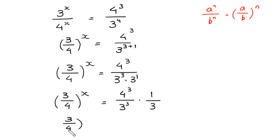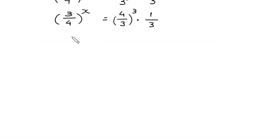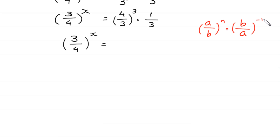So 3 over 4 whole to the power x equals — by using the power rule a to the power n over b to the power n equals a over b whole to the power n — this 4 to the power 3 divided by 3 to the power 3 becomes 4 over 3 whole to the power 3, times 1 over 3. Then, using the rule that a over b whole to the power n equals b over a whole to the power negative n, this becomes 3 over 4 whole to the power negative 3, times 1 over 3.